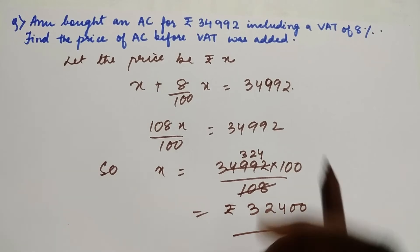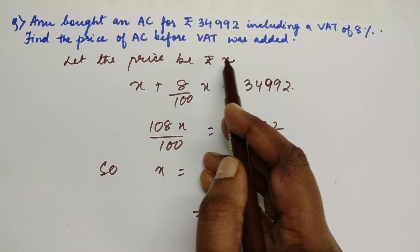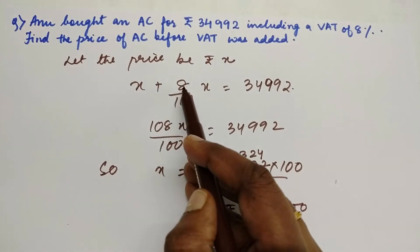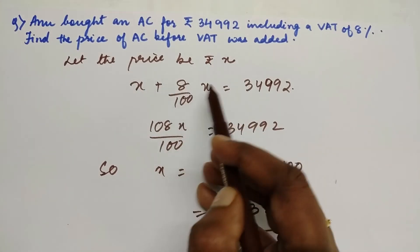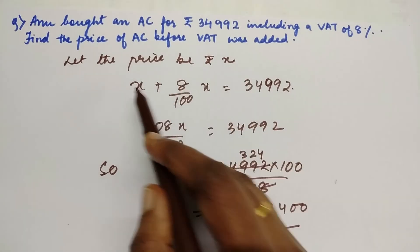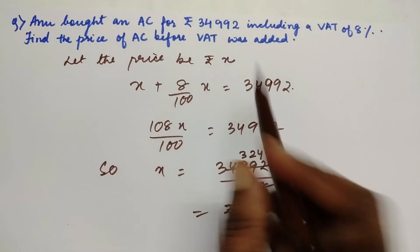So here we did not know the price, we took it as X. Sales tax is always going to be added, so 8% of the amount, that is X plus 8% of X, equals the total which is given to us. Simple calculation.